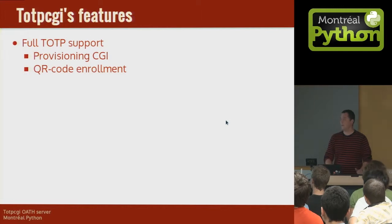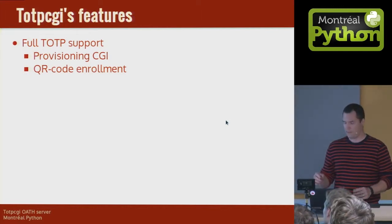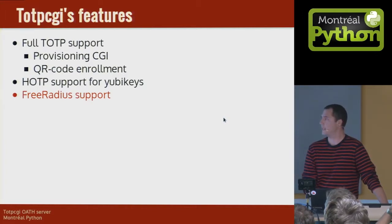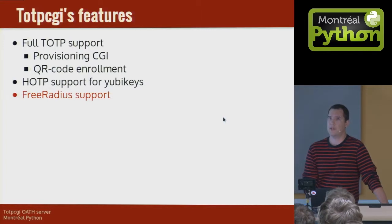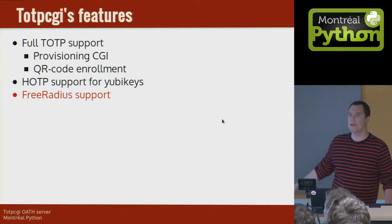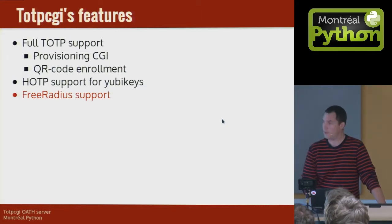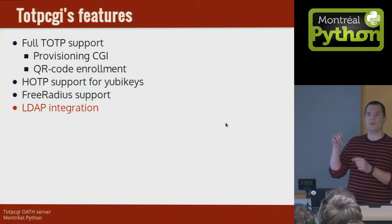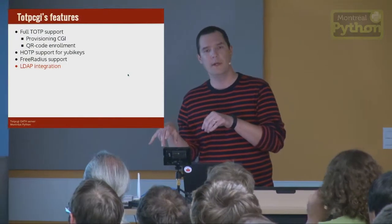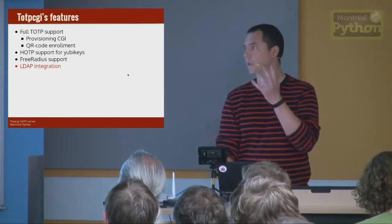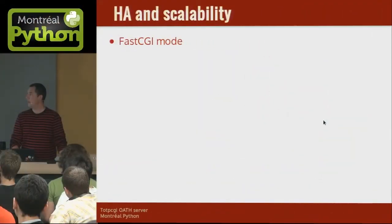The features of TOTP-CGI are: full TOTP support, a provisioning CGI which I will showcase in a moment, QR-based enrollment, and all the good things. We have HOTP support for YubiKeys. We have FreeRadius support, because it's been requested so many times we just wrote it. FreeRadius is pretty much still the only game in town — it was written in the early 90s and uses a pre-shared secret that is one for all clients and the server, so if one client is compromised you basically have to redo your entire setup. It's really horrible, but everybody still uses it. There's also LDAP integration, so you can type your password then type in the six-digit code — the same as with RSA SecurID — and TOTP-CGI will check your password with LDAP and then check your code separately.